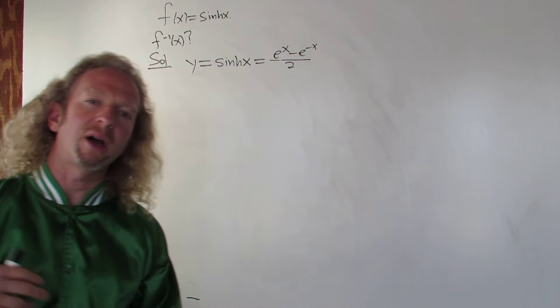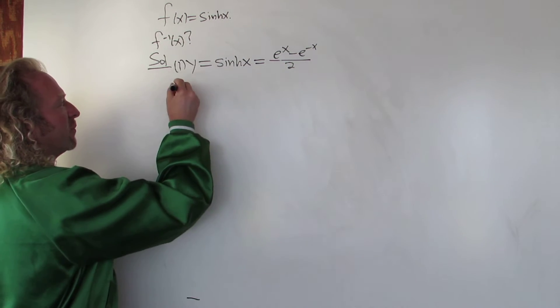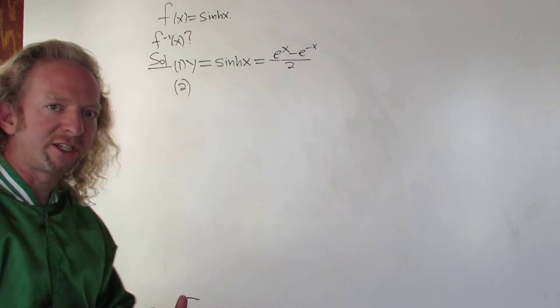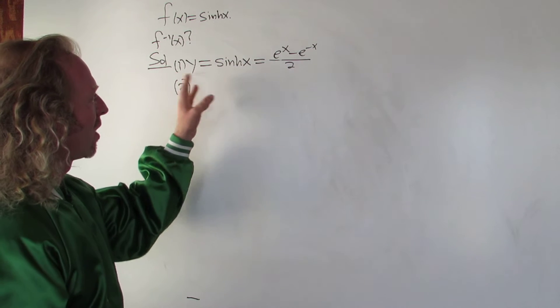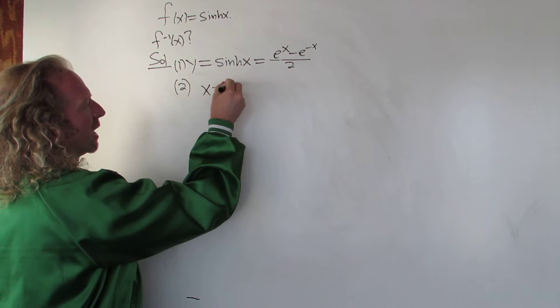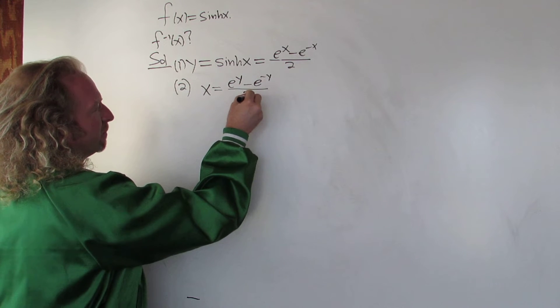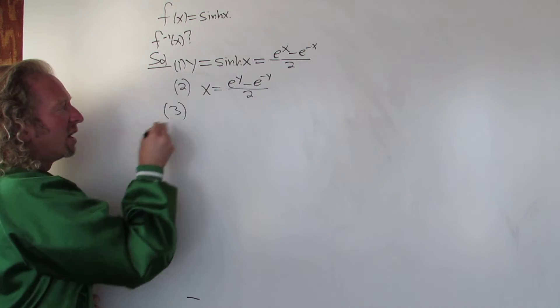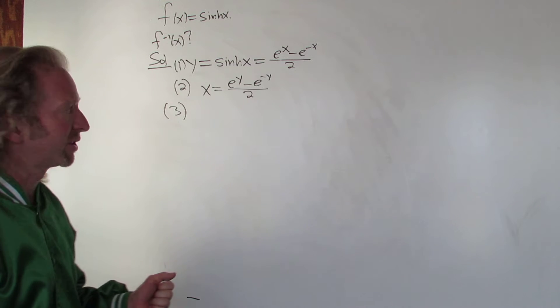So that's typically the first step when you're finding the inverse, when you're learning how to find inverses. That's step one. Step two, usually when you're finding inverses, is you switch the x's and y's. So x becomes y and y becomes x. So this is going to be x equals e to the y minus e to the negative y all over two. And then step three is to actually solve for y. And once we solve for y, that's going to be our inverse function.